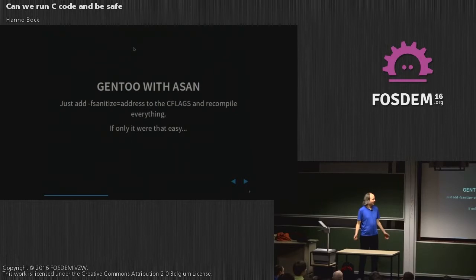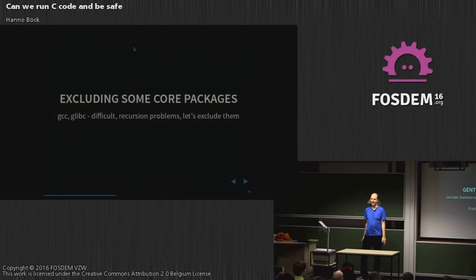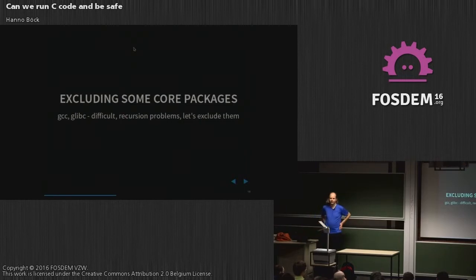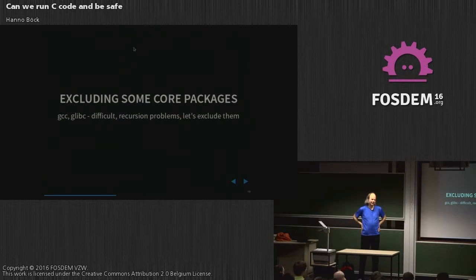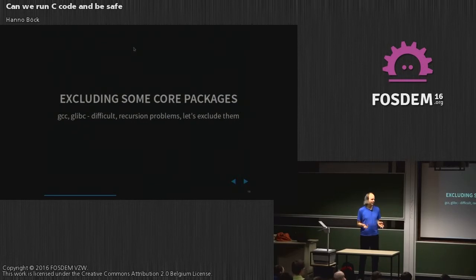You might think it's just a compiler flag, let's edit and recompile everything. But it's actually not that easy. Some of the problems are: if you try to compile glibc with AddressSanitizer, you run into a problem because AddressSanitizer is actually replacing some of the glibc functions to intercept memory allocations and know what's going on, and then you get recursion problems. You also cannot easily compile GCC. It's possible to compile glibc and GCC with AddressSanitizer, but it doesn't work out of the box.